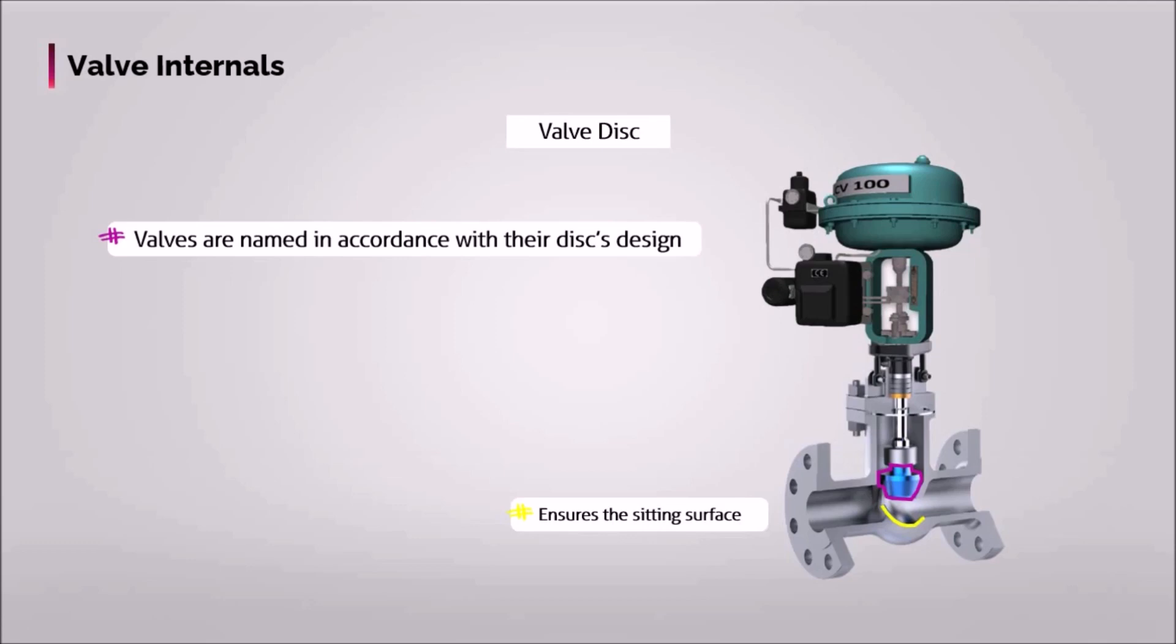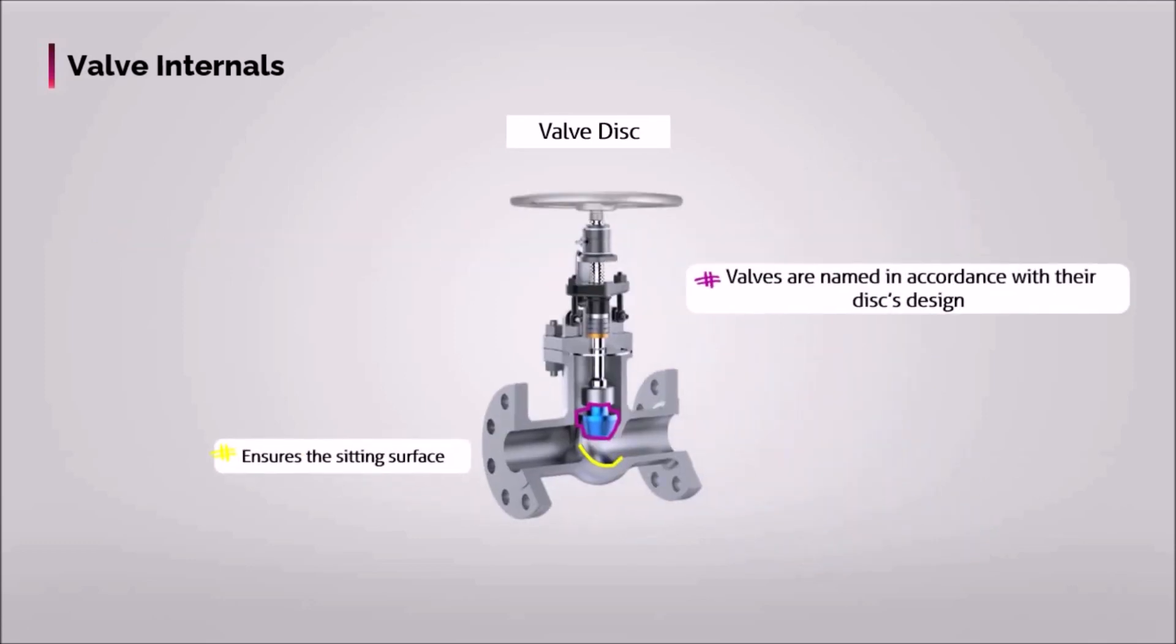There are various forms of sealing rings and they can be made of the similar material as the valve body or even softer material. The most problematic part of the valves is their seats because of the leakages as discs may not sit tightly or valves may not be tightly closed.